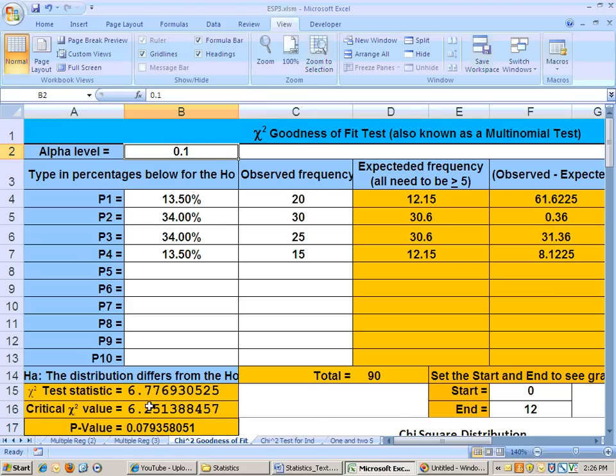So, at the 0.1 alpha level, we do get significant results, which means at the 0.1 alpha level, I am able to show that the distribution does differ from a normal distribution.